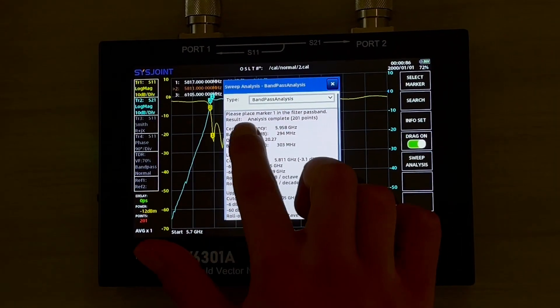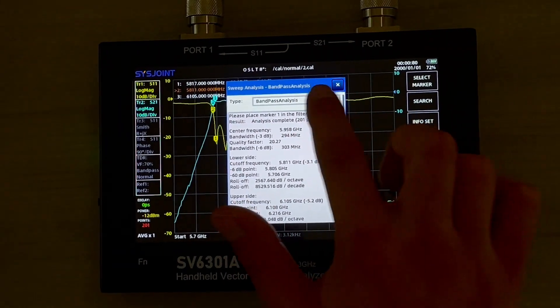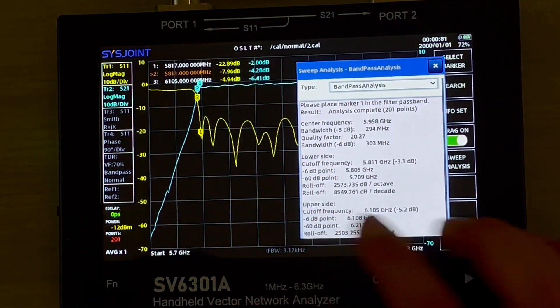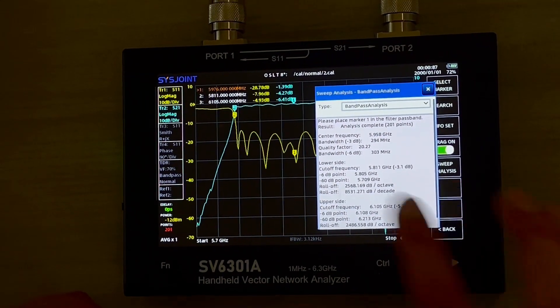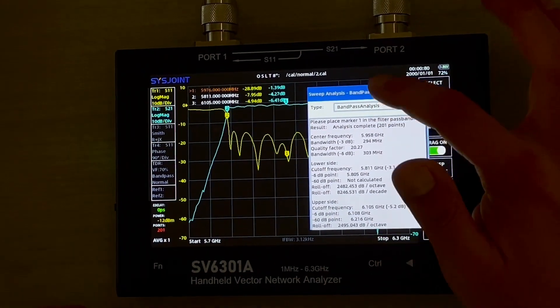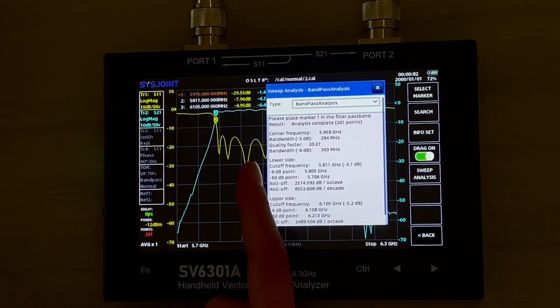It tells us we need to place marker one to the filter passband. Okay, what we do is select marker one and move it inside the working passband. And now it starts to analyze. We can take a look.